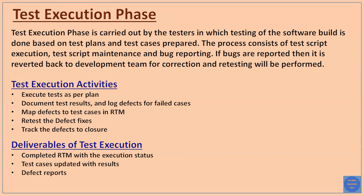Additional test execution activities include mapping defects to test cases in the RTM, retesting defect fixes, and tracking defects until they are closed. The deliverables of the test execution phase are the completed RTM with execution status, updated test cases with their actual status (pass, fail, blocker, etc.), and defect reports.